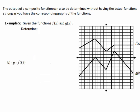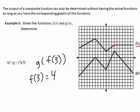One more example: g of f of 3. We first find the output of f of 3. Going to function f on the graph and counting to x equals 3, we get an output of 4. We take that 4 and put it into g. Going to graph g at x equals 4, the output is 1. So g of f of 3 equals 1.